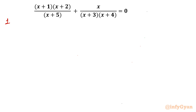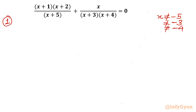So let me write here method number 1. I will begin with exempted value domain. So x cannot be equal to negative 5 from the first denominator value x plus 5. We cannot consider minus 3 also, we cannot consider minus 4 also. So these values are restricted values or exempted values.